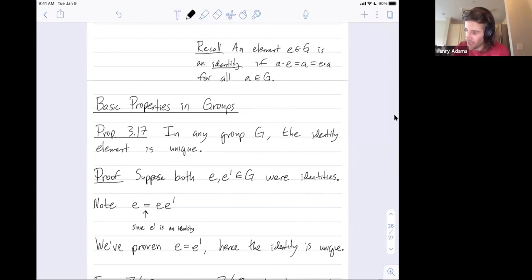But also E is an identity, so E times E prime doesn't change E prime. So E times E prime has to be equal to E prime, and this is since E is an identity.